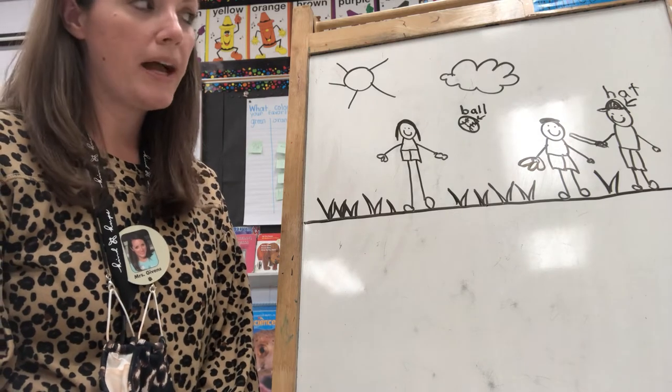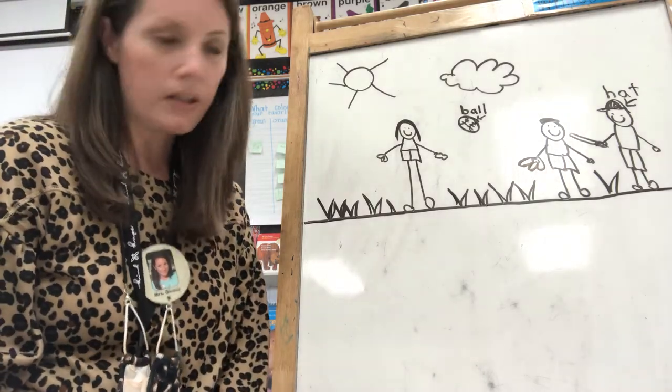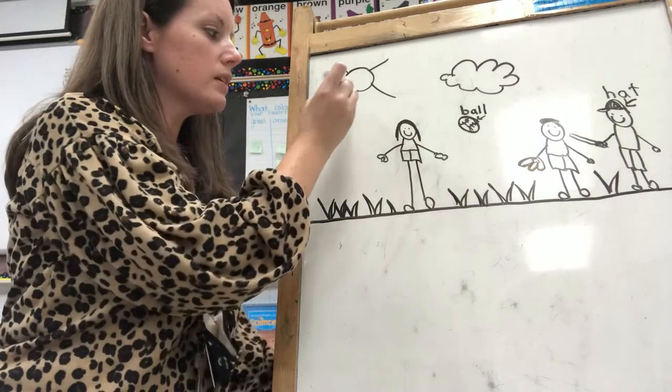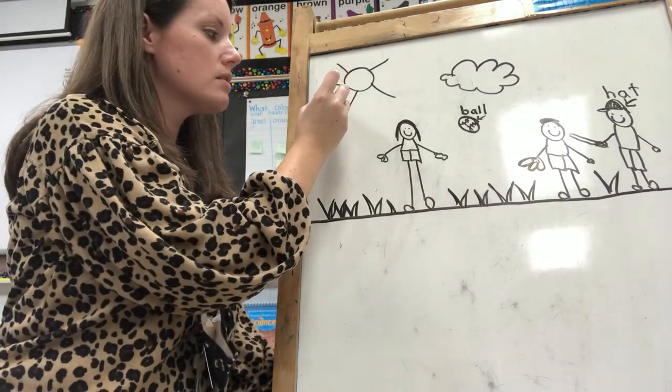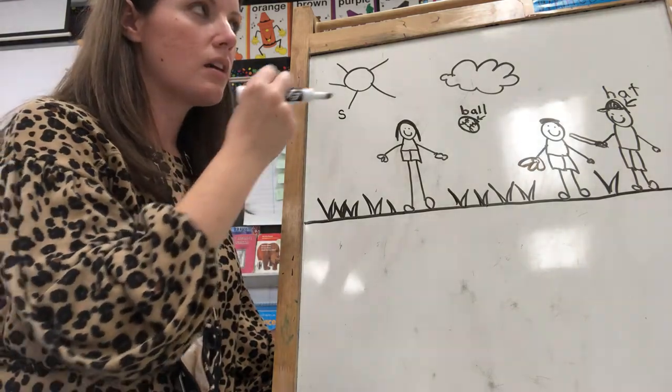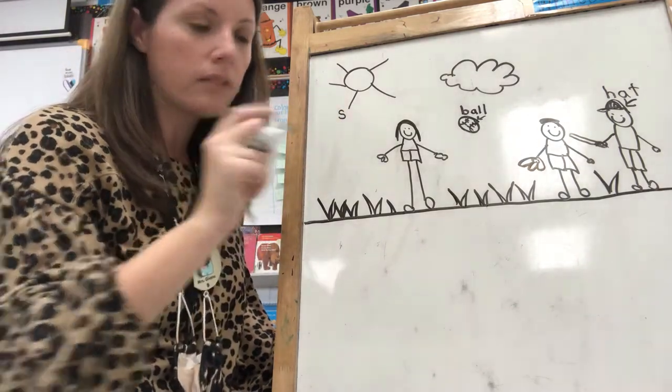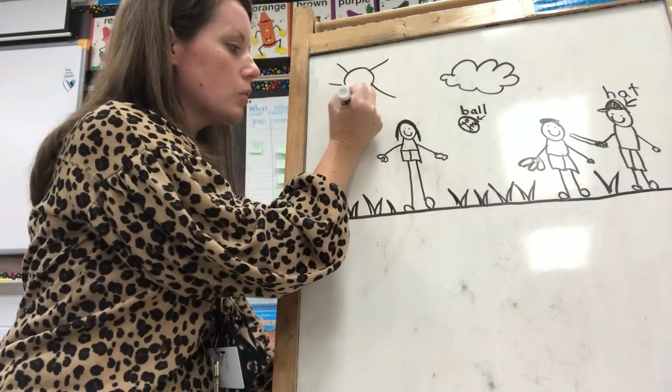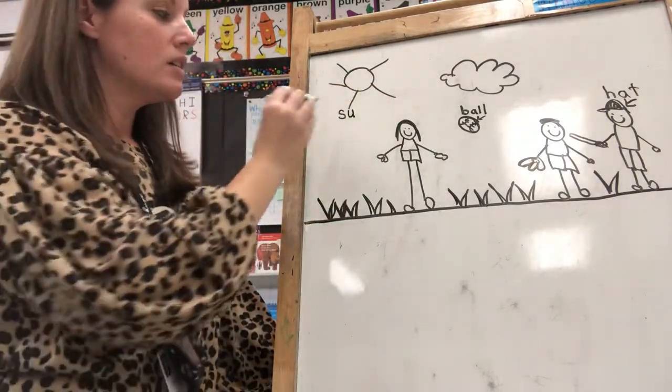How about the sun? Let's label the sun. What sound do you hear at the beginning of sun? That's right, S. What do we hear next in sun? What letter says 'uh'? U. What's the last sound in sun? What letter says 'nnn'? It's an N.